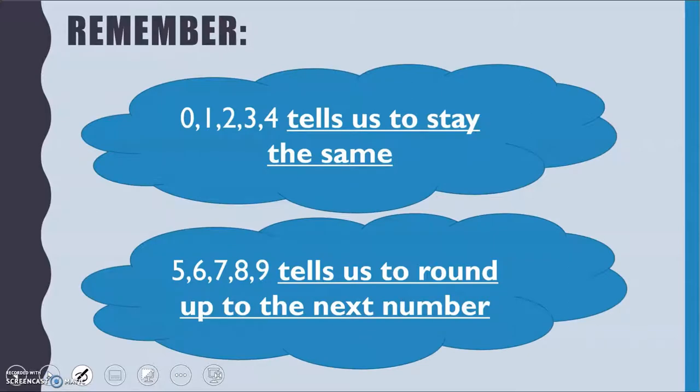A quick reminder from our previous rounding lessons: remember the number we are looking at comes after the place value we're interested in. If the number we are looking at is 0, 1, 2, 3 or 4, the number we're rounding to stays the same, and 5, 6, 7, 8 or 9 tells us that we are going to round up to the next number.